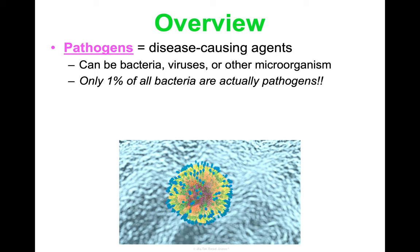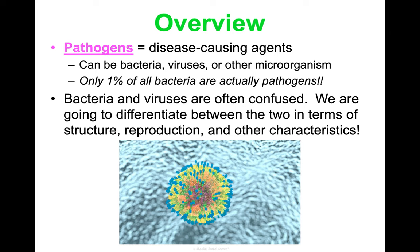Something I really want to highlight is that only 1% of all bacteria are actually pathogens. So there's so much more about bacteria and viruses than just specifically causing disease. I want to give you an overview of bacteria and viruses, separate from just talking about them in terms of them being pathogens. And also, I want to give us some clarification so that we can know the differences between the two, because these often get confused. We're going to differentiate between them in terms of structure, reproduction, and some other characteristics.